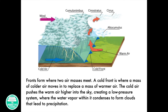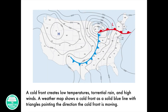Fronts form where two air masses meet. A cold front is where a mass of colder air moves in to replace a mass of warmer air. The cold air pushes the warm air higher into the sky, creating a low pressure system where the water vapor within it condenses to form clouds that lead to precipitation. A cold front creates low temperatures, torrential rain, and high winds. A weather map shows a cold front as a solid blue line with triangles pointing the direction the cold front is moving.